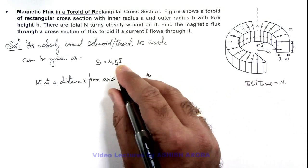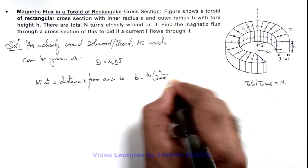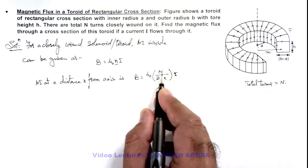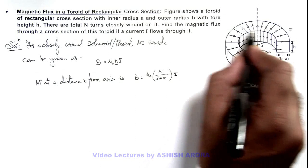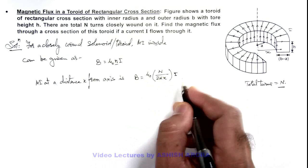It is B = μ₀(N/2πx)I, because for this circle of radius x, total turns are again N, so turns per unit length will be N/(2πx).